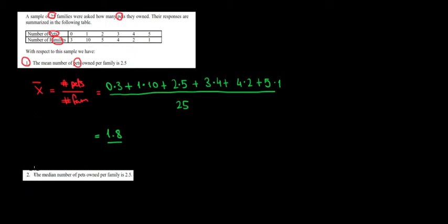Let's have a look at question 2 in this video and it is related with the distribution from question 1. We want to say whether it is true or false that the median number of pets per family is 2.5.